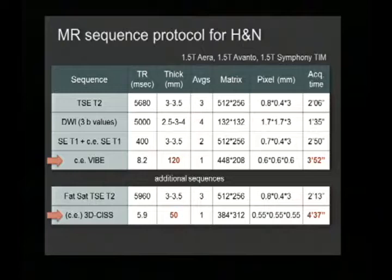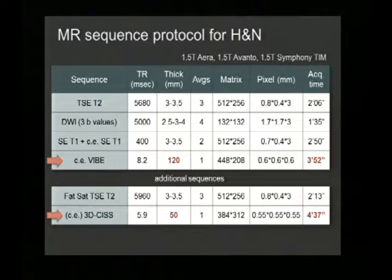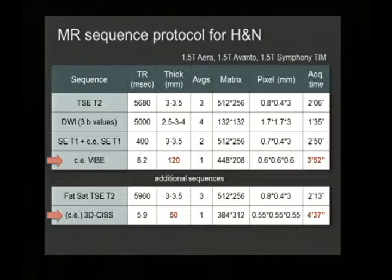Regarding technique: for lesions close to the skull base, we use the volume interpolated breath-hold (VIBE) technique with isotropic acquisition, covering 12 centimeters in four minutes. For skull-base lesions, we also adopt the CISS sequence after contrast agent — a 3D sequence with coverage limited to 50 millimeters, also acquired in about four minutes.